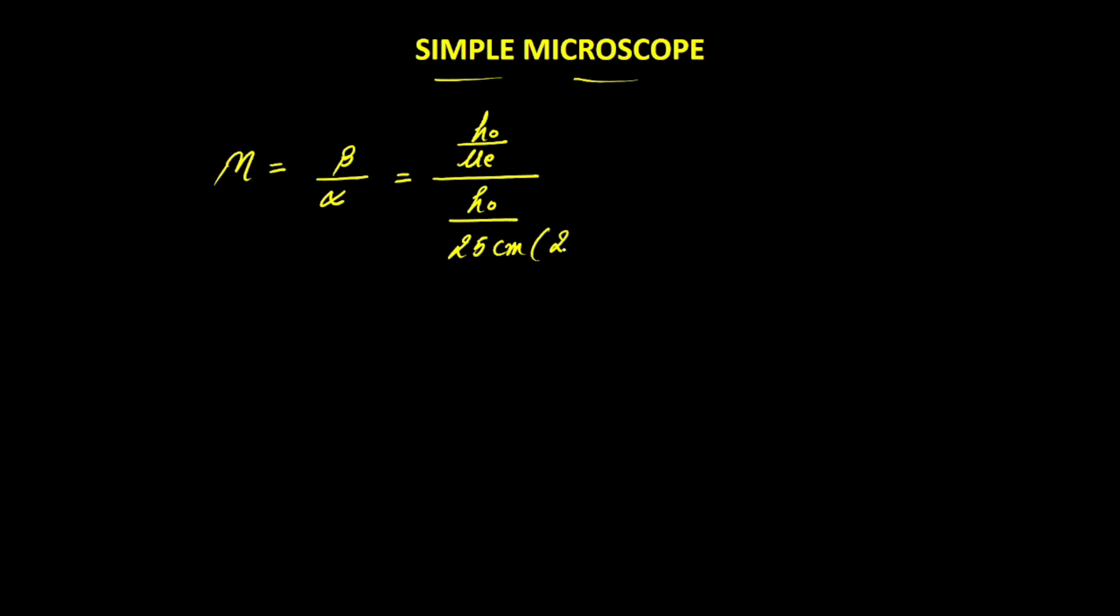And this 25 centimeter can simply be written as capital D, that is the near point of a normal human eye. We can write this as height of object divided by UE times capital D divided by H0. Height of object and height of object gets cancelled and the formula we get is D divided by UE. So the formula for magnification of a simple microscope comes out to be capital D divided by UE, where capital D is the near point distance of a normal human eye, that is 25 centimeter.